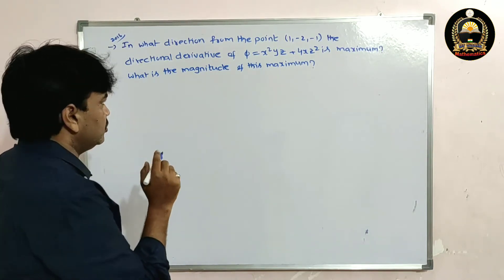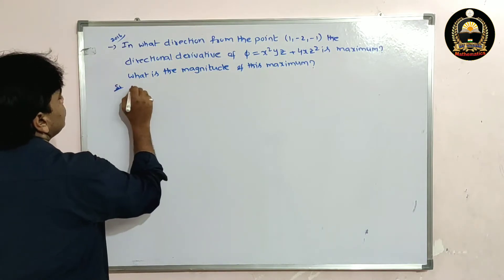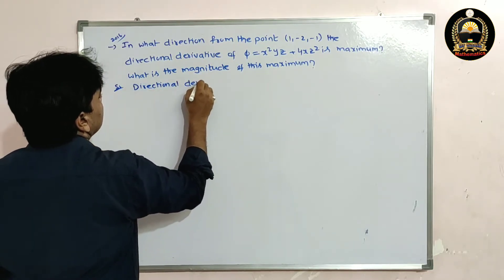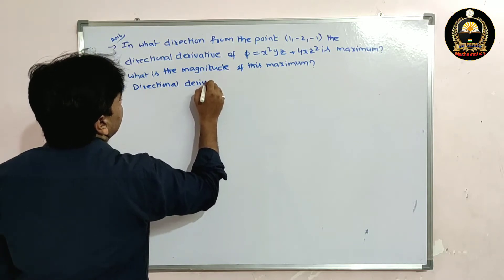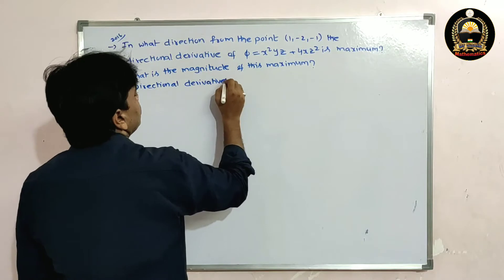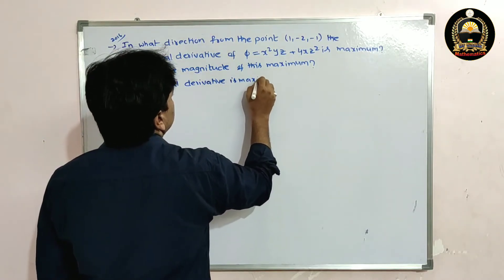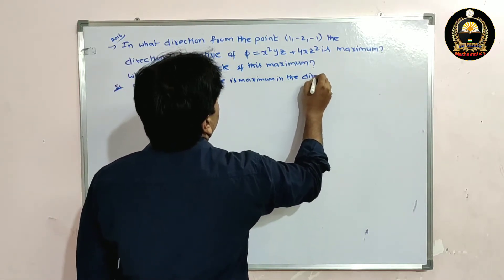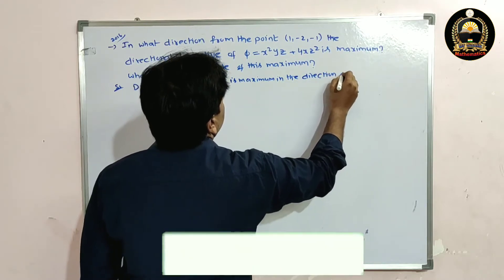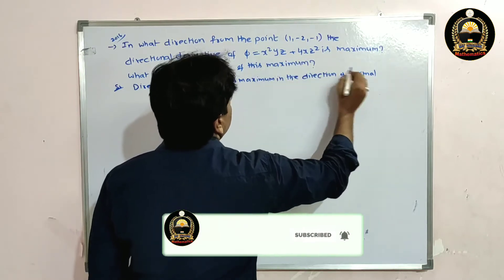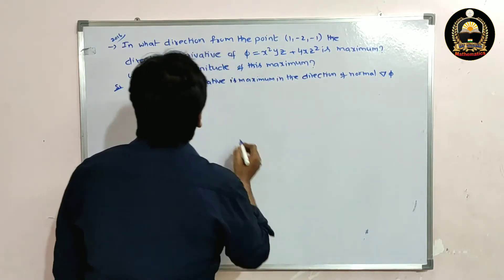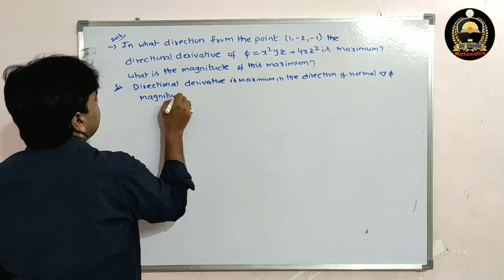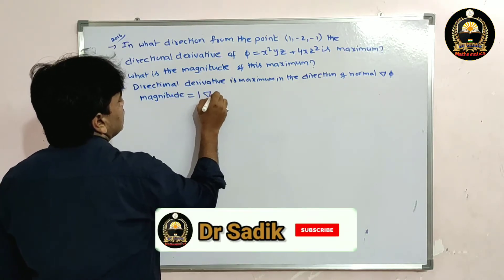In which direction is the directional derivative maximum? It is maximum in the normal direction. So the solution is: the directional derivative is maximum in the direction of the normal. The normal is del φ (the gradient of φ). We need to find the magnitude, which is modulus of del φ.